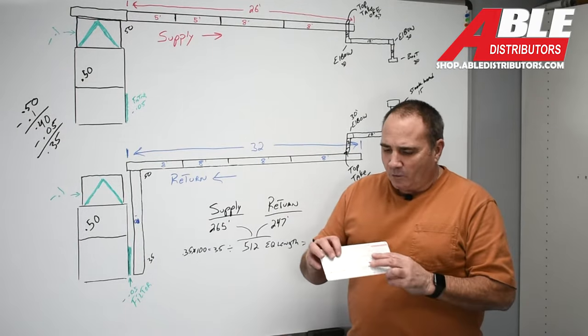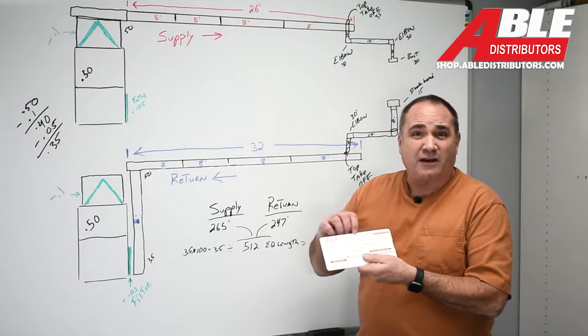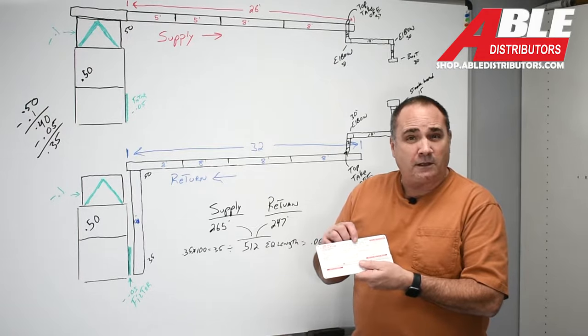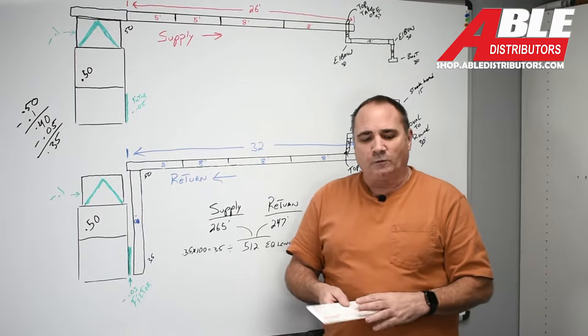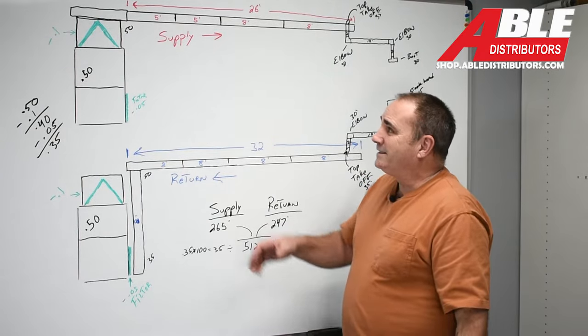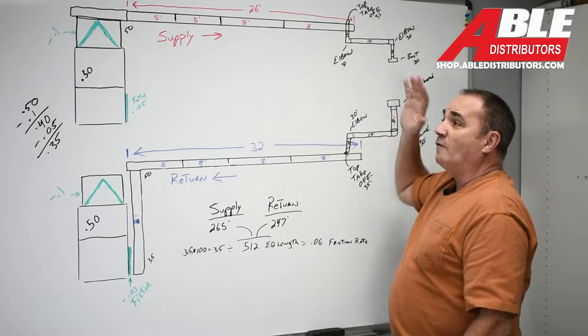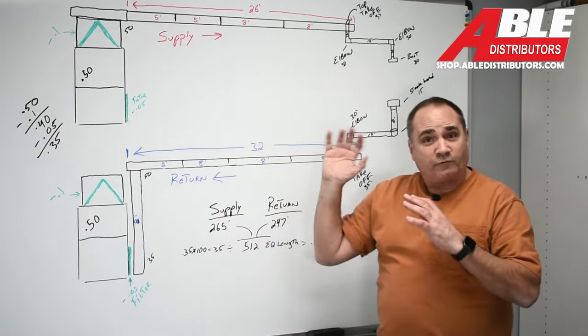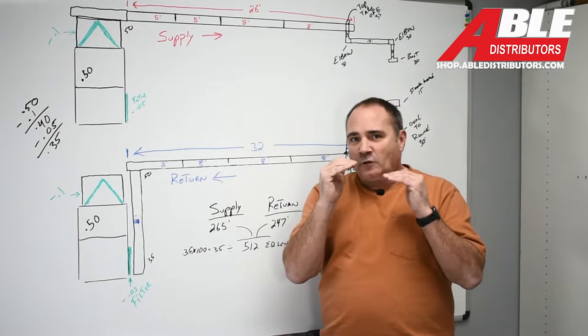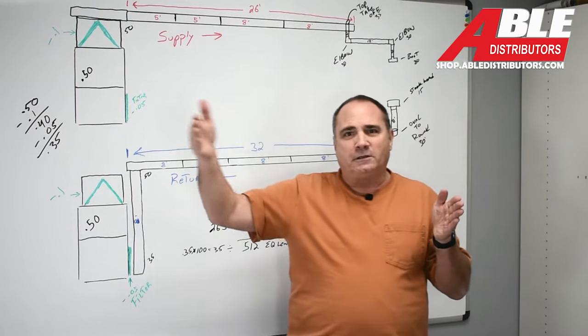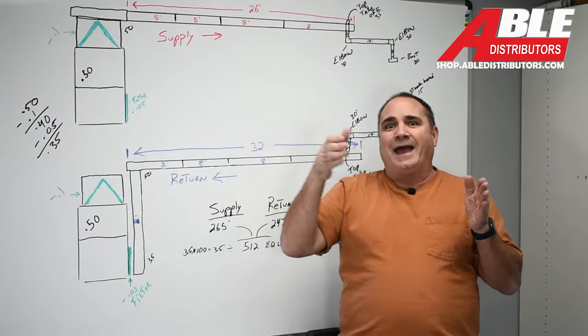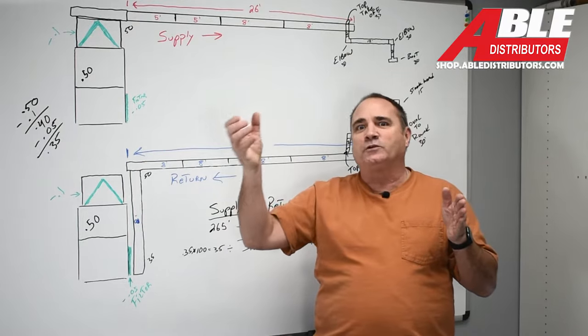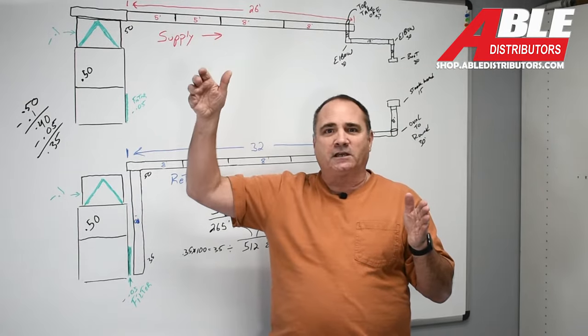But to get what friction rate you're actually going to want to use on your ductulator, there's a little bit of a math problem and a little bit of a layout problem. So what you need to do is get the equivalent length of the longest run, both for supply and return. Now that longest run might not necessarily be the one farthest from the furnace. There might be one ahead of that one that has more turns and twists, goes up to the second floor.